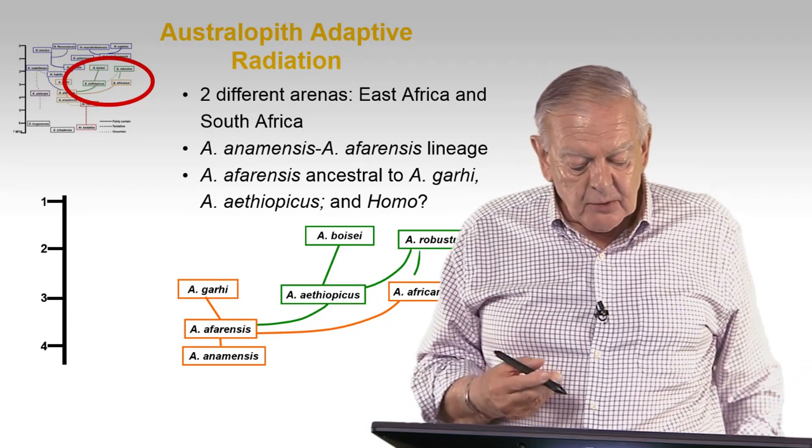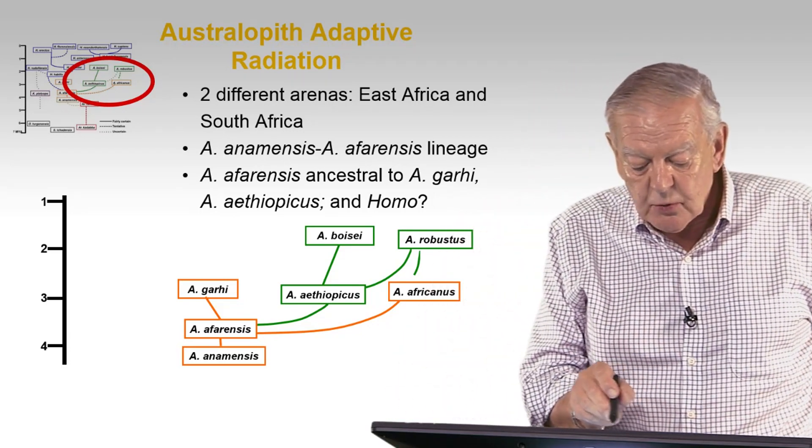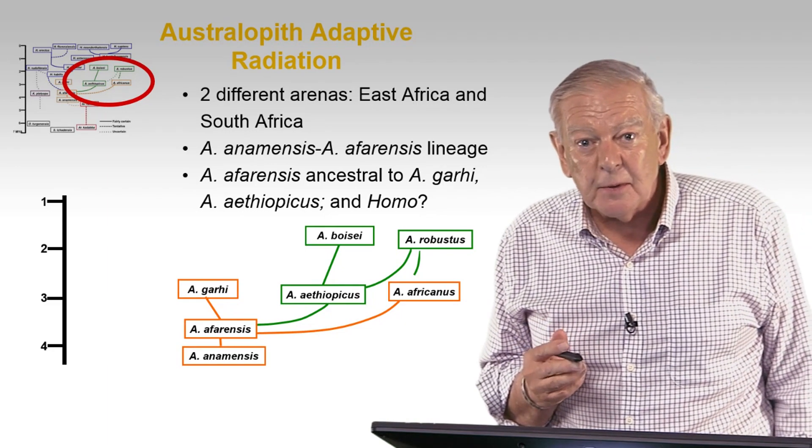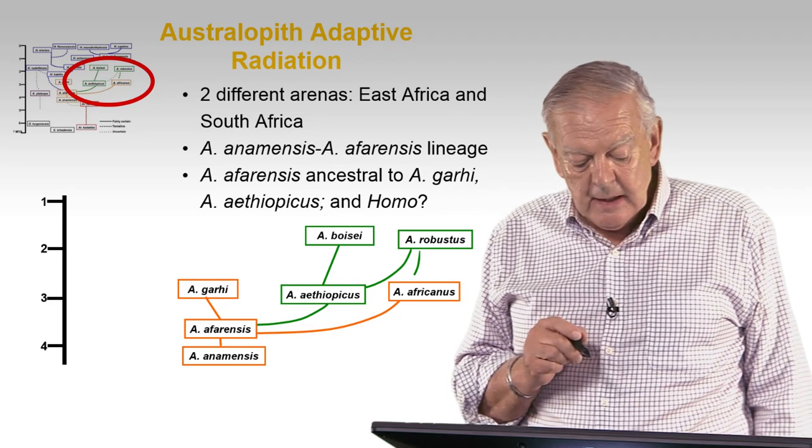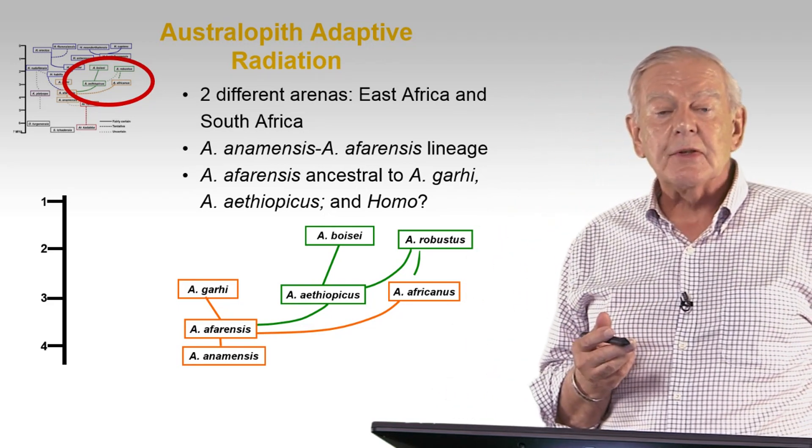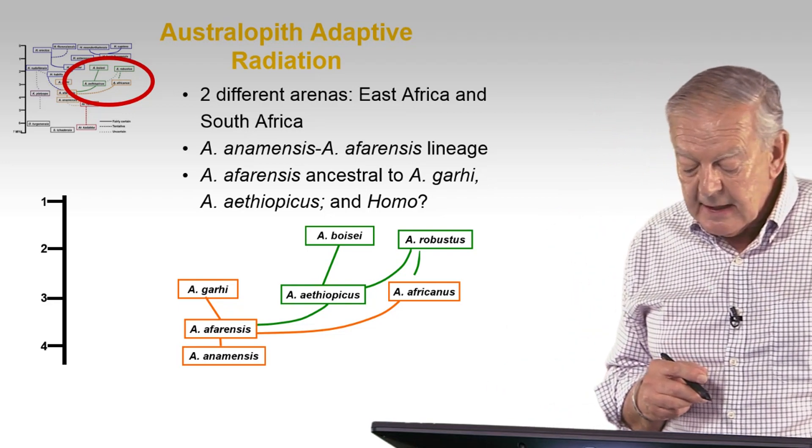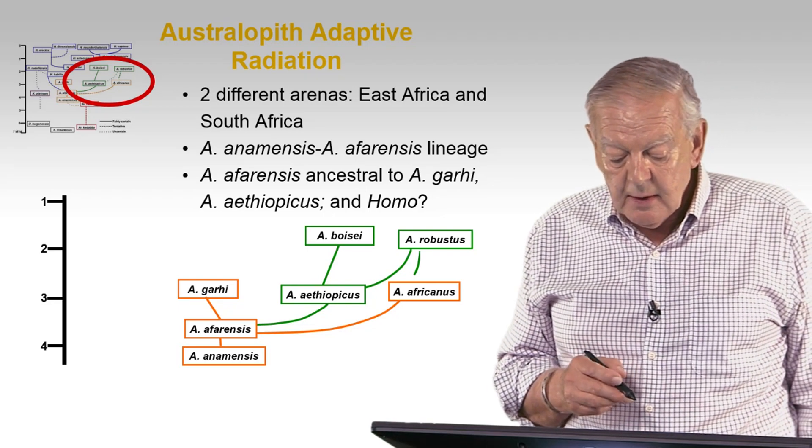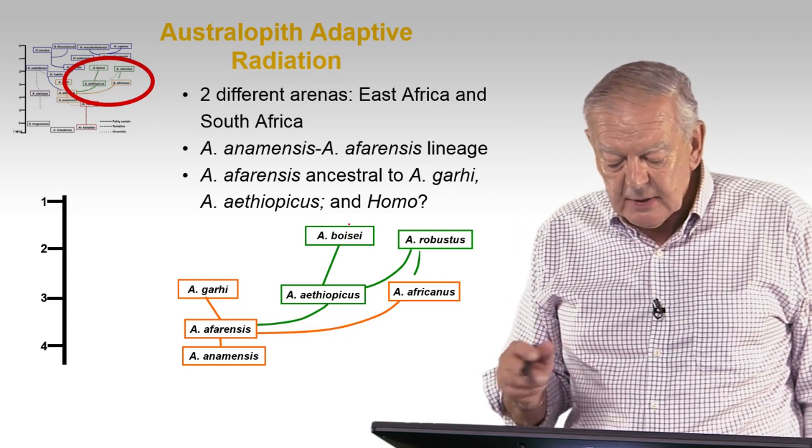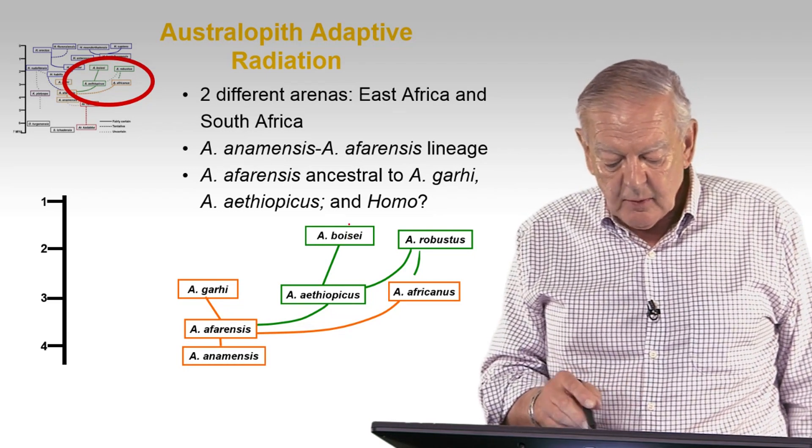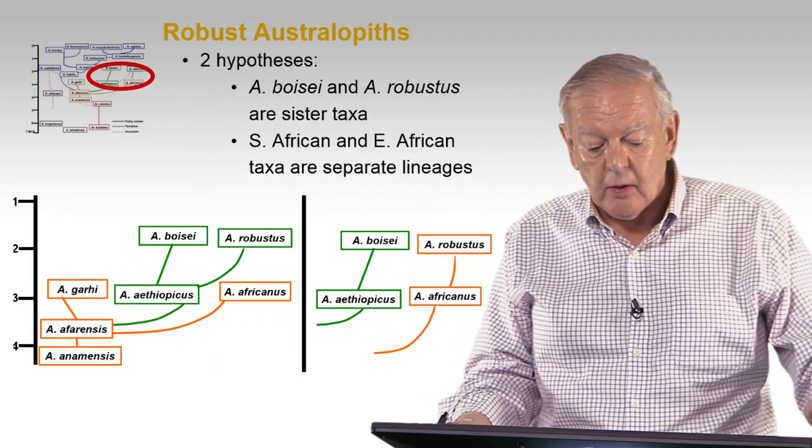We do have, interestingly, some lineages. We have a lineage between Anamensis, the species found at Canapoi, as an ancestor to Afarensis. We published a very detailed paper on that. And out of Afarensis comes, perhaps, certainly, Aethiopicus, possibly Africanus, but Aethiopicus leading into Boisei, and perhaps, as we will see, also Homo.